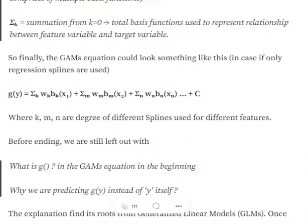The final GAM equation, if we are using regression splines, looks like: g(y) = Σk wk·bk for each feature, summed over all features m and n. Each term represents the relationship being modeled for a given feature f(n) with g(y). That is why we have different degrees of splines for different features.